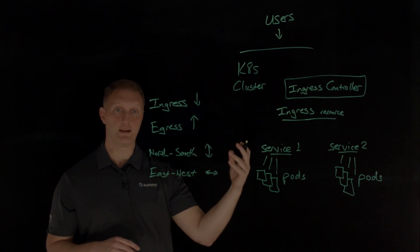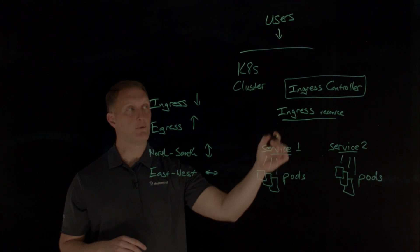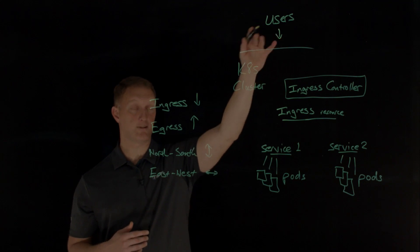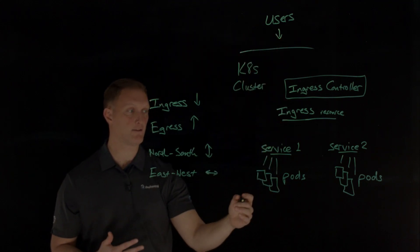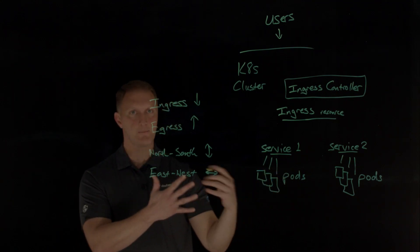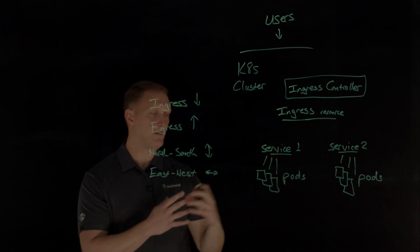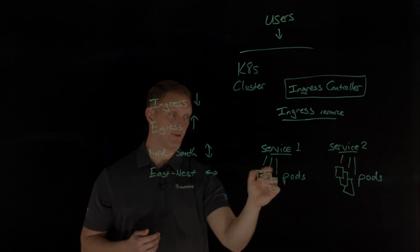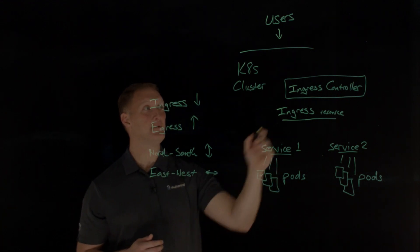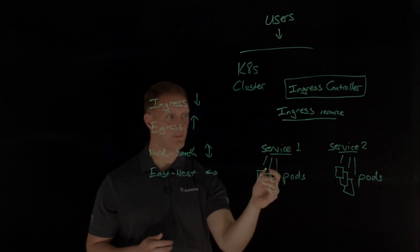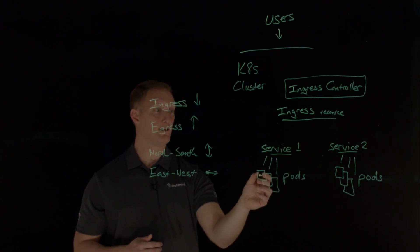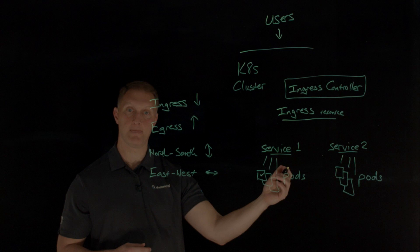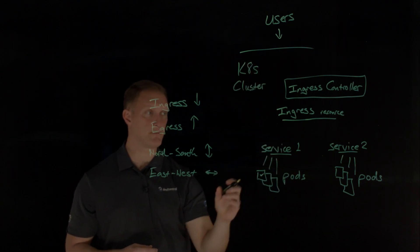The ingress controller also monitors the individual pods of a service, guaranteeing intelligent routing and preventing requests from becoming black holes. Because pods are ephemeral, a user request might be destined for a specific pod that suddenly disappears. The ingress controller monitors the service and the pods backing that service, and will intelligently route or load balance traffic to the appropriate available pod for that service.